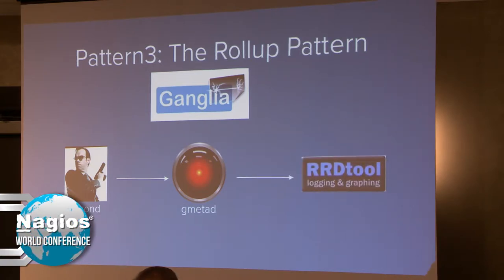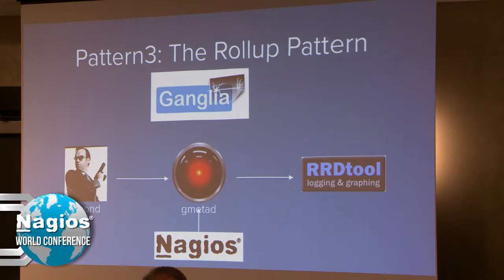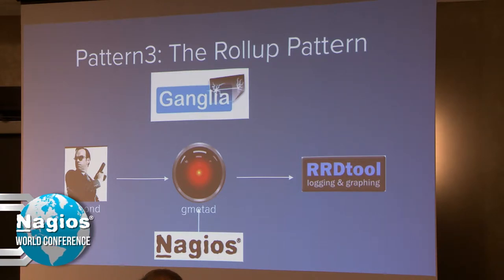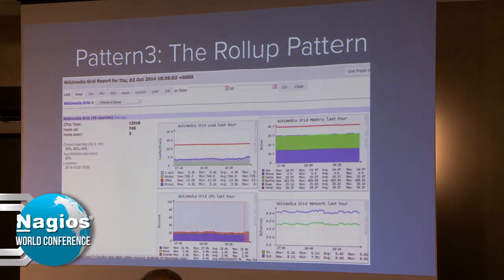GmetaD pulls data from the various gmond agents it's configured for, and either forwards it along or persists it in RRD tool. GmetaD is also cool because it has a socket interface, so other tools can interact with the GmetaD box as long as they can talk to a TCP socket. There are Nagios checks in the contrib directory of ganglia that allow you to point a Nagios box at a GmetaD, query data out of the GmetaD socket interface, and then compare the return values to expected thresholds.